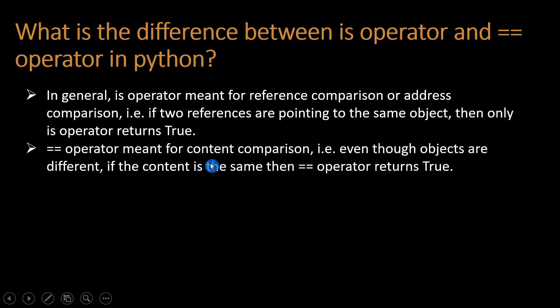The == operator is meant for content comparison. Even though objects are different, if the content is the same, then the == operator returns True. The == operator compares the content, not the object. So if the content is the same, we get the output True.